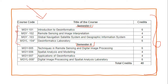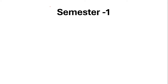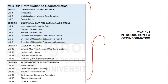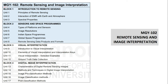In Semester 1, the first subject is MGY101 — Introduction to Geoinformatics — covering an overview of geoinformatics, geospatial data and data analysis tools, basics of mapping, and applications. The second subject is MGY102 — Remote Sensing and Image Interpretation — covering introduction to remote sensing, sensors and space programs, visual interpretation, and digital image interpretation.